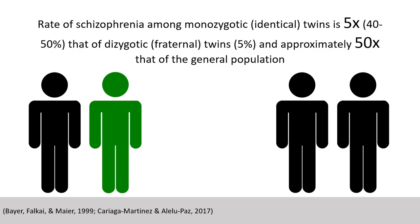A two-hit model is proposed in schizophrenia, in which insults early in brain development, prenatally or perinatally, combine with later disturbances in neuronal development in adolescence, leading to psychosis.